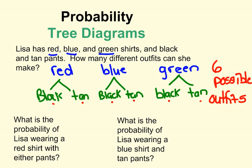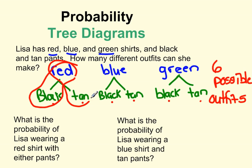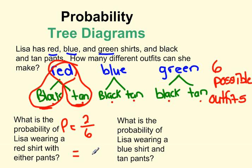What is the probability of Lisa wearing a red shirt with either pants? We're going to find the red shirts on our tree — she could wear the red and black, or the red and tan. So we've counted two possibilities out of a total of six outcomes. That's two over six, and reducing by two gives us one-third.